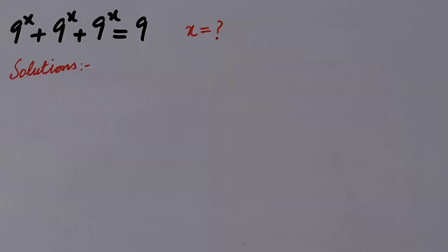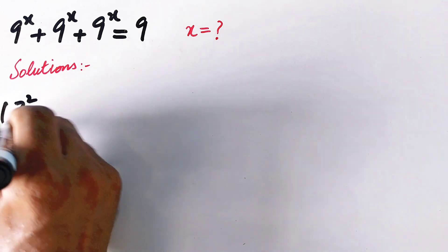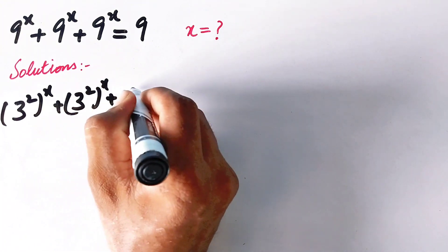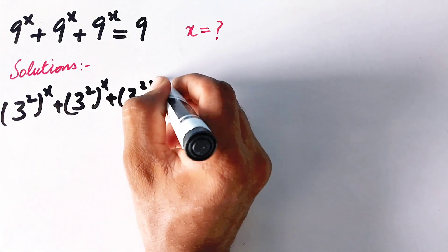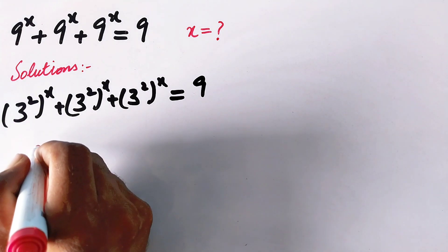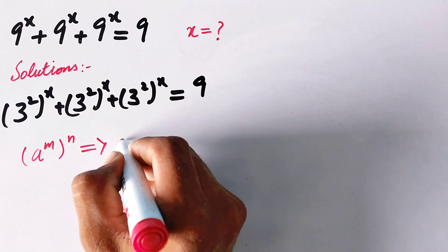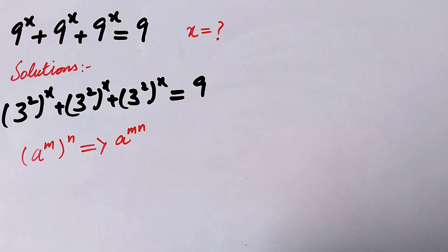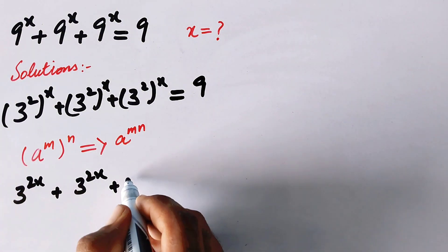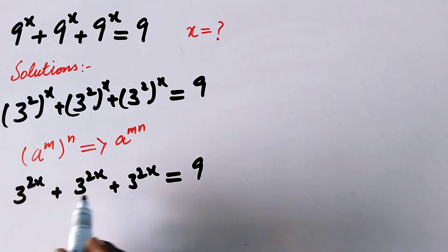Now we are going to solve the question by another method. We can write 9 as 3², so the equation becomes (3²)^x + (3²)^x + (3²)^x = 9. Using the exponential rule — a^m raised to power n can be written as a^(m·n) — this becomes 3^(2x) + 3^(2x) + 3^(2x) = 9.